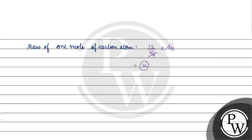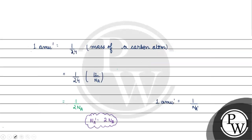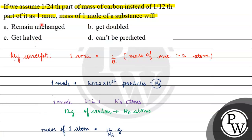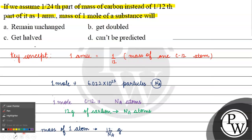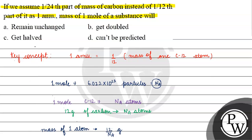The mass of one mole of carbon atom is still twelve — it remains the same. The value of Na' changes, but the mass stays unchanged. So for the question: if you assume one twenty-fourth part of mass of carbon instead of one twelfth part as one amu, the mass of one mole of a substance will — the correct option is option A: it will remain unchanged. I hope you understood it well. Thank you and all the best.